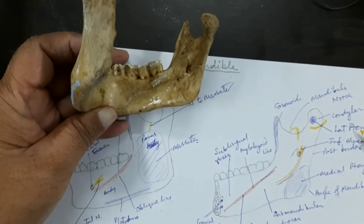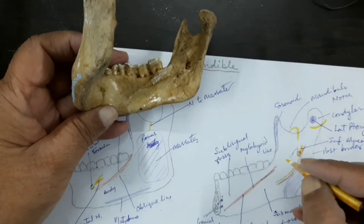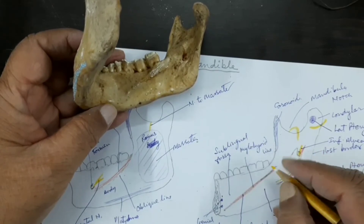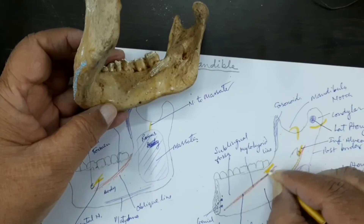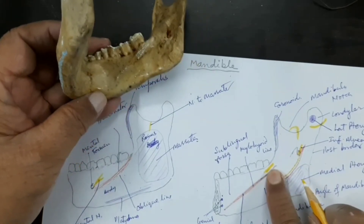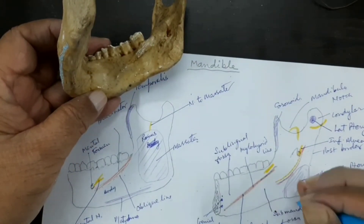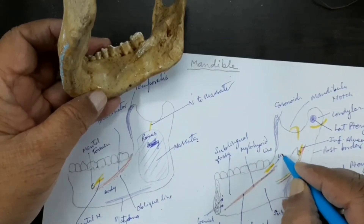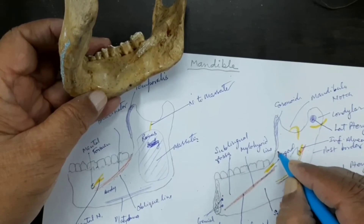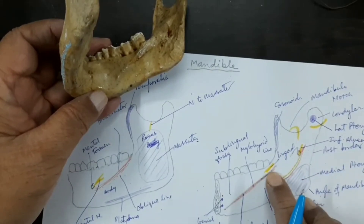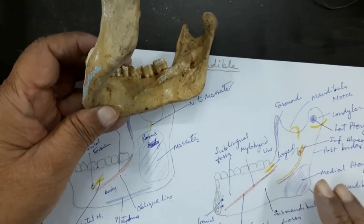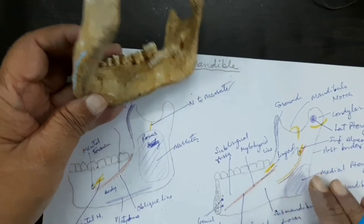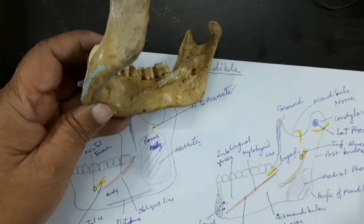Another nerve related to the medial surface is located just inferior to the third molar — the last molar. This nerve is the lingual nerve, a branch of the mandibular nerve. This completes the nerves in relation to the mandible, which are present on both external and mostly on the internal or medial surfaces.